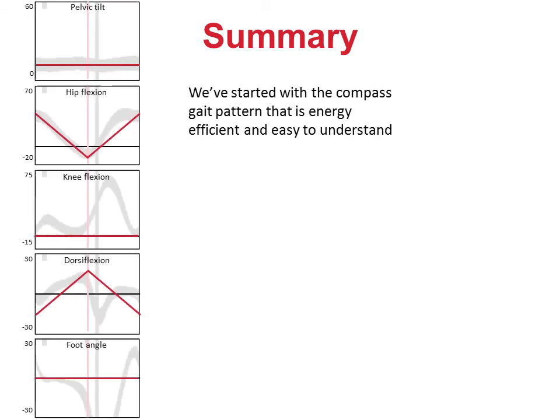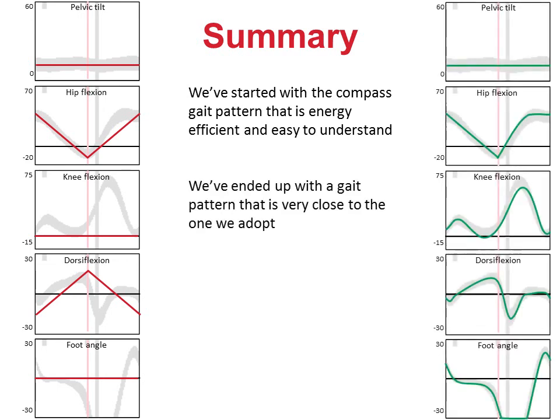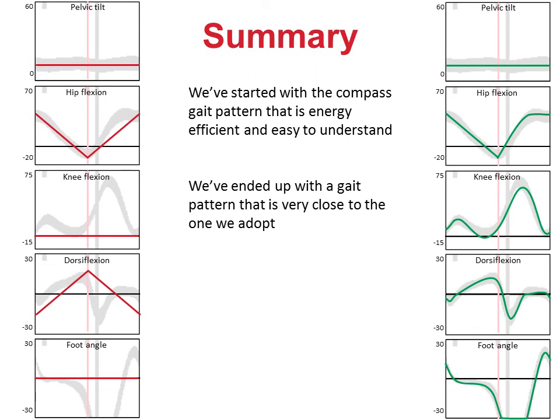In summary, over the sequence of these video lectures we've progressed from compass gait — the simplest conceivable pattern of bipedal walking, as typified by the red graphs on the left-hand side of this slide — to the full complexity of normal human walking, as depicted by the green graphs on the right. Throughout this, we've understood the reason for each of the incremental modifications, and can thus say with some justification that we fully understand the kinematic characteristics of normal walking in the sagittal plane.